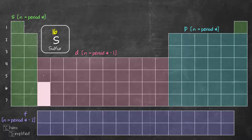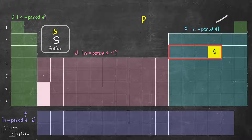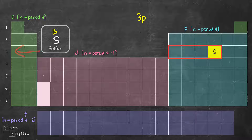Next is sulfur, element number 16, located in the P block. The relationship between the energy level and the period number is the same for P block. Sulfur is located in period 3, so we write 3 in front of P. Sulfur is the 4th member in the P block, so we write a superscript 4 — giving us 3p4.